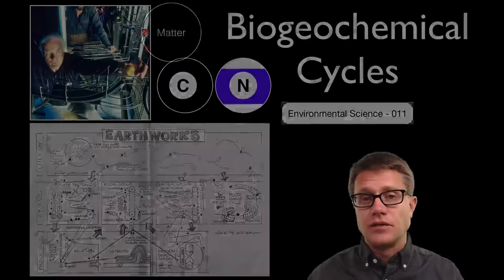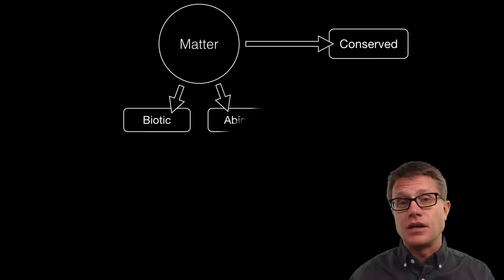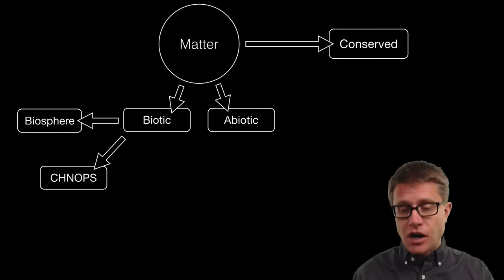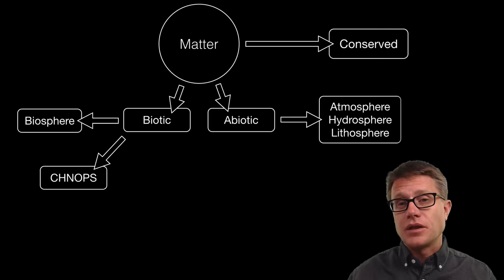The carbon and the nitrogen that we have is set and it just moves around between the living and nonliving world. And so the matter on our planet is conserved. We have a set amount and it moves between the biotic or living and abiotic world. The living world is called the biosphere on our planet and the nutrients that we need are best remembered in this mnemonic CHNOPS.